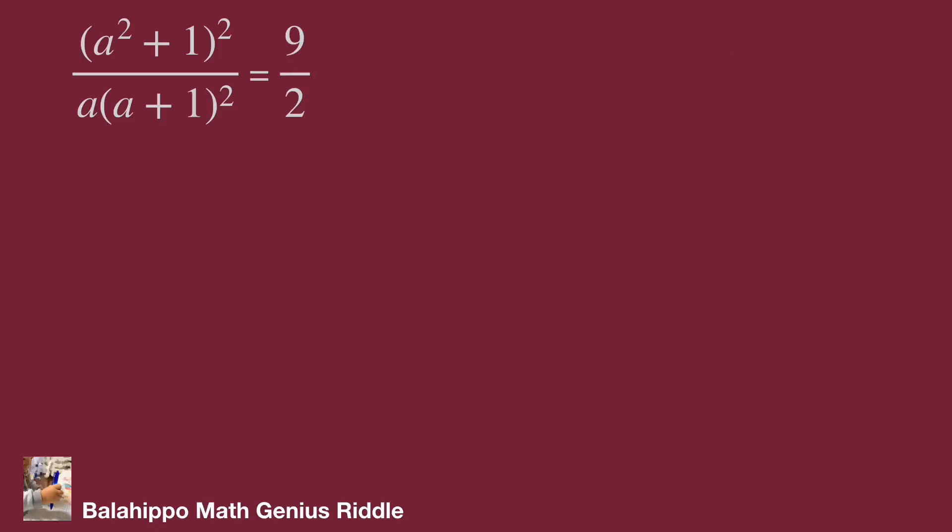When solving the equation, we may cross-multiply the fractions and make an equation like 2 multiply (a² + 1)² equal to 9a multiply (a + 1)² and try to find the solutions.